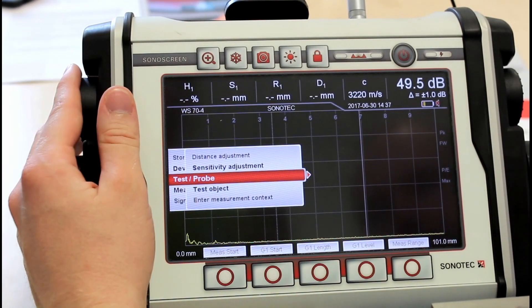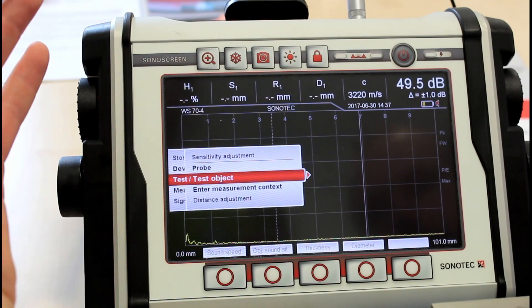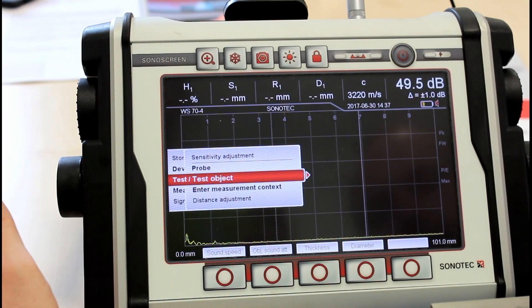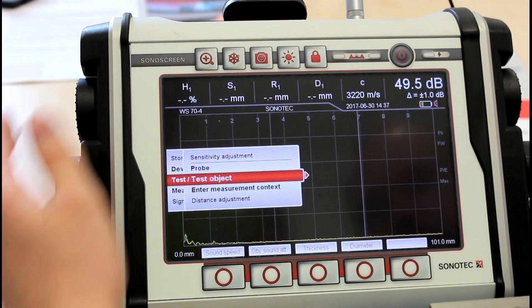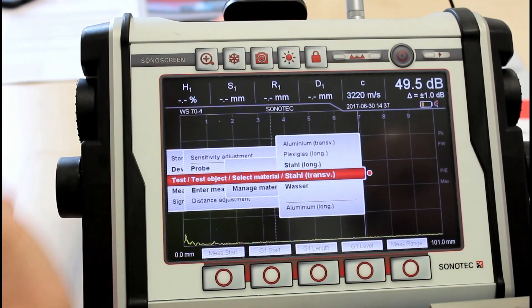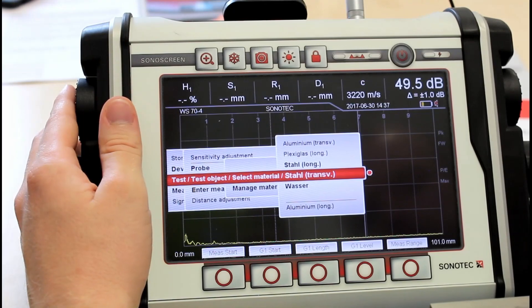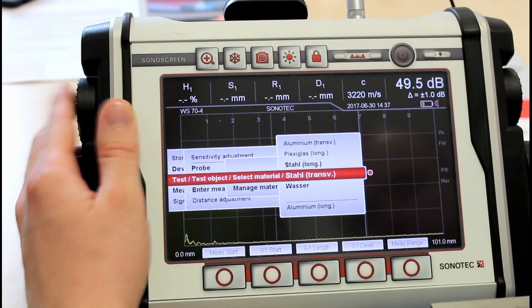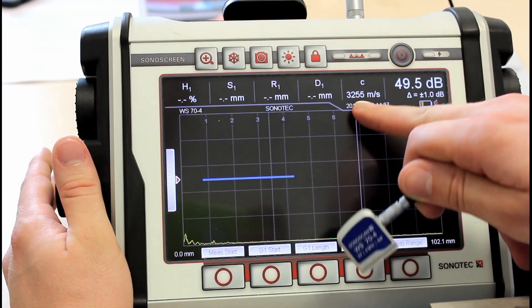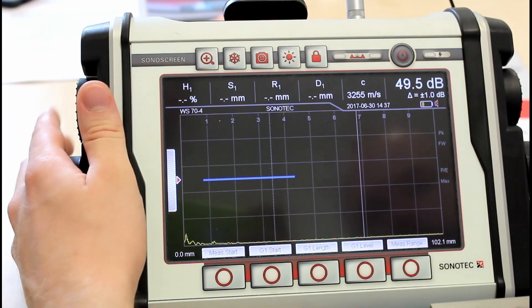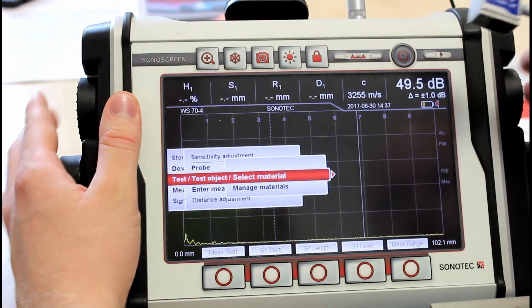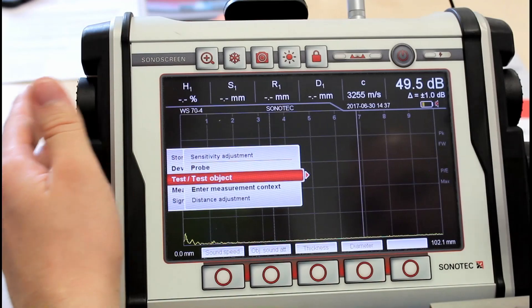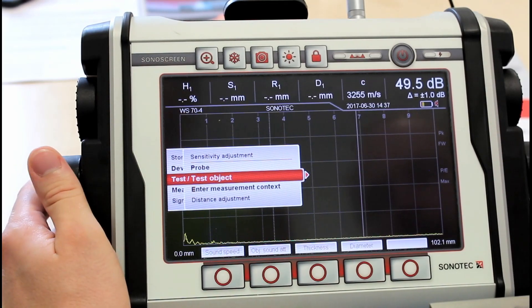So your probe was selected. The next thing you want to define your test object. As we are doing a calibration on a V1 steel calibration block, we are going to select steel and the transversal wave as the material and sound speed. So that is a default value of three thousand two hundred fifty-five meters per second. You can also put in new materials and have a material list.